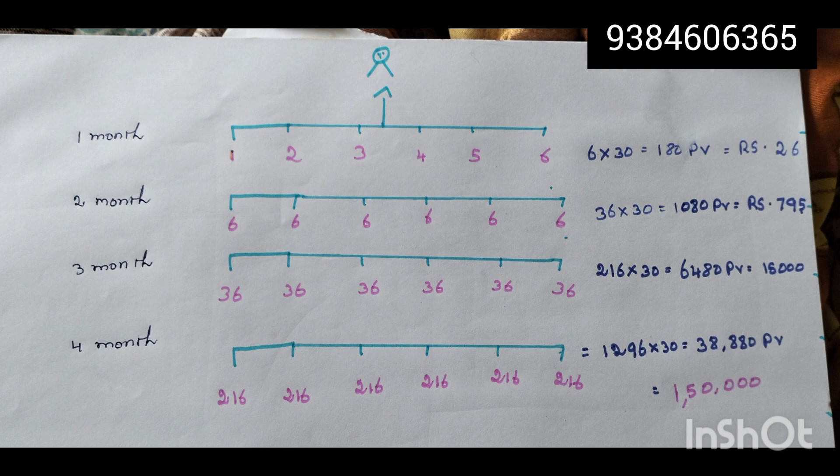The fourth week is 6 per year. The total PV is 38,880. The income is 1,50,000. This is the Crown Direct.